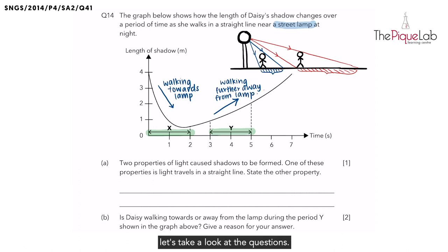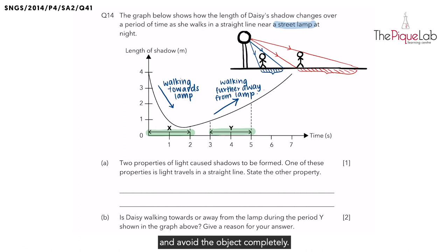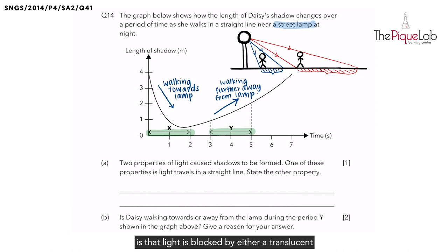Let's take a look at the questions. The first question tells us that two properties of light actually cause shadows to be formed. One of these properties is that light travels in a straight line. What is another property that allows shadows to be formed? Since light travels in a straight line, when we place an object in the path of light, the light cannot bend around and avoid the object completely — light will actually be blocked by an object. And when light is blocked, we get a shadow. So the second property of light is that light is blocked by either a translucent or an opaque object.